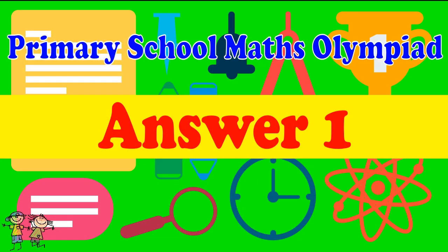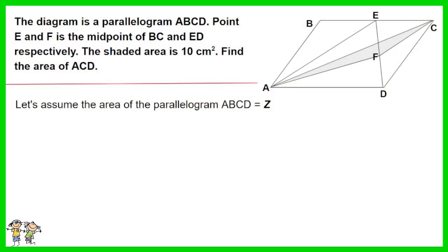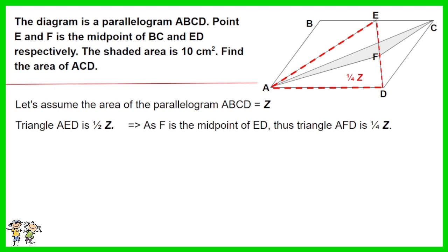Answer for question 1. Let's assume the area of parallelogram ABCD equals Z. E is the midpoint of BC, thus triangle AED equals half Z. As F is the midpoint of ED, triangle AFD equals one quarter Z.